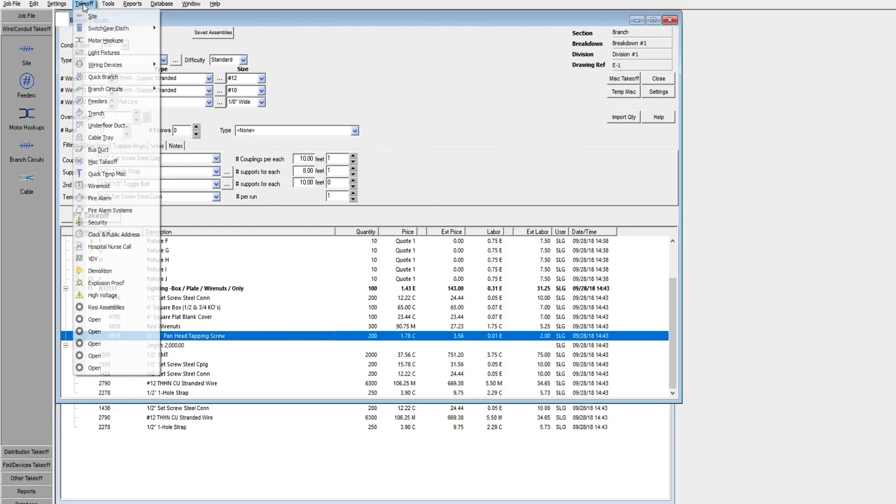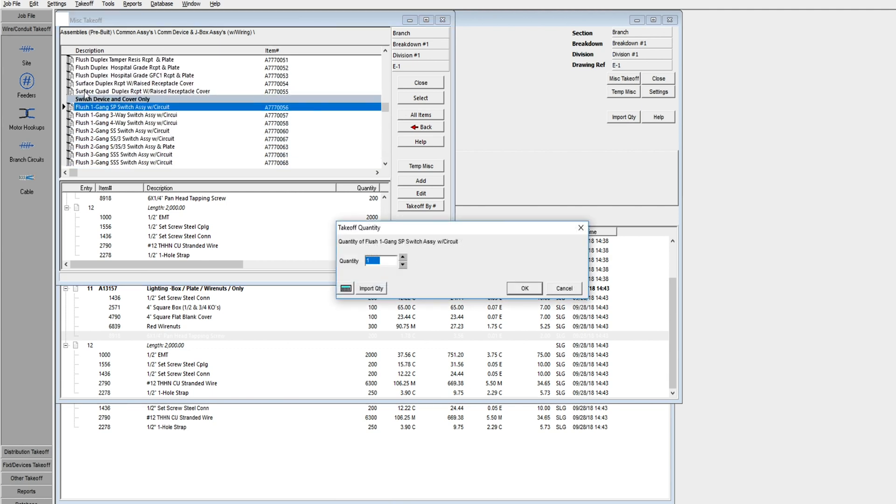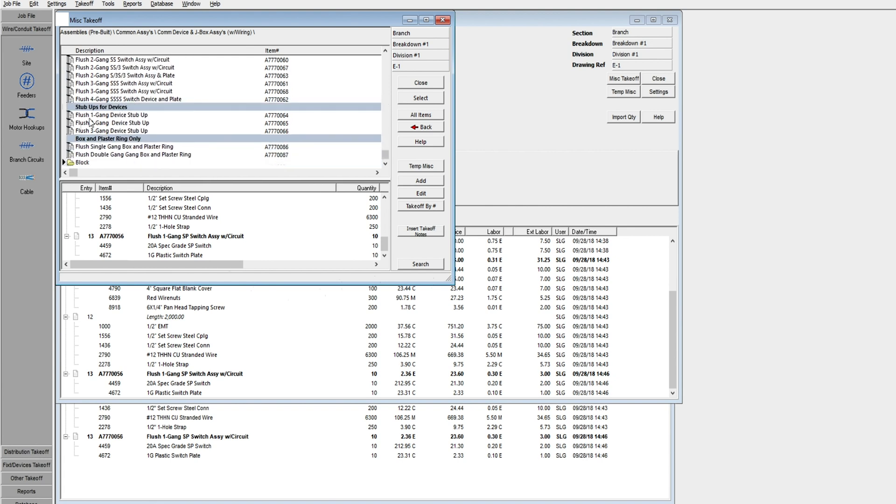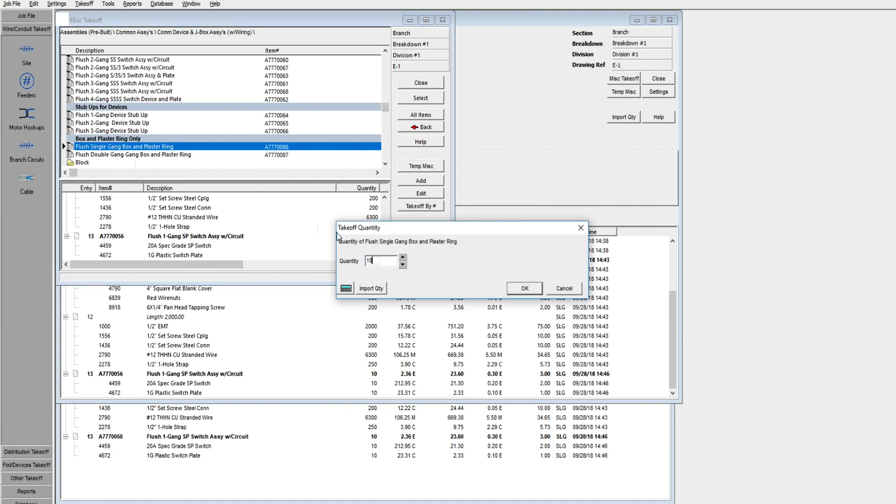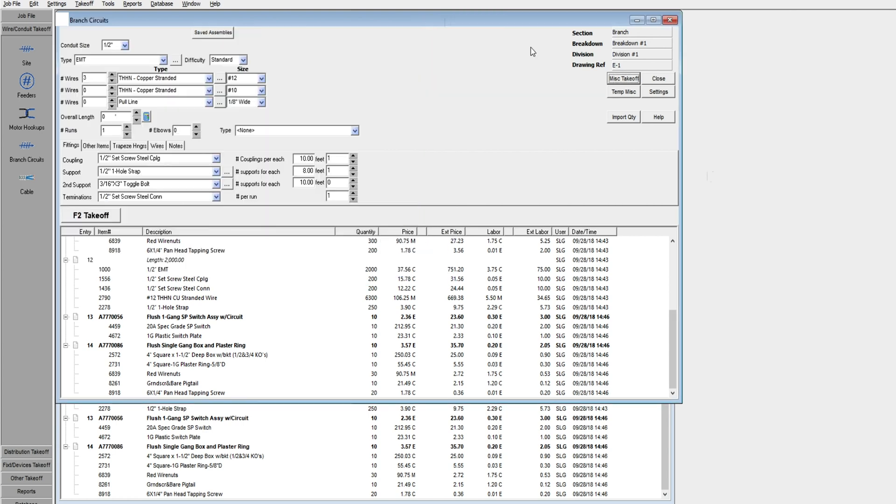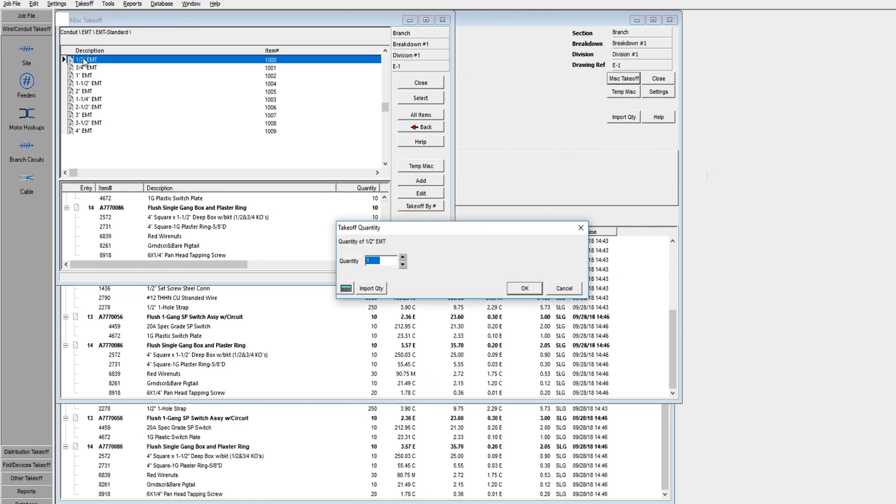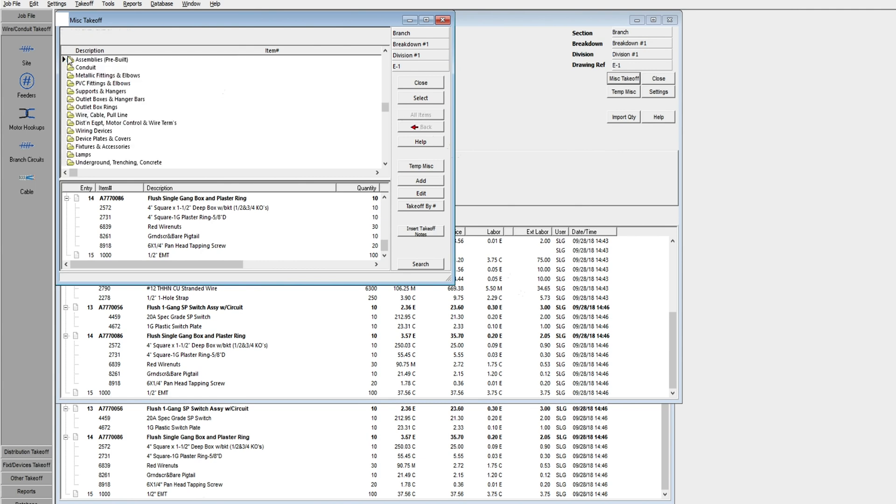Now in this video I'm going to show you the steps I use to enter the items mentioned above. Find miscellaneous takeoff. Choose through the list to find your switch and plate then enter your quantities. Choose through the list to find your box and plaster ring. Enter your quantities. Go back to miscellaneous takeoff, sort through the tree for conduit. Choose EMT. Choose the size. Enter quantity. OK. Now do the same for your fittings and your straps.